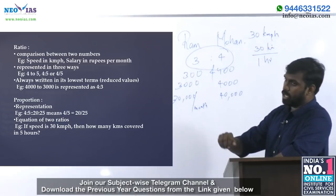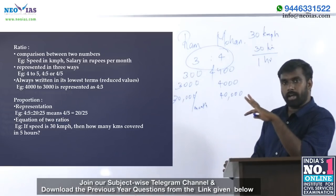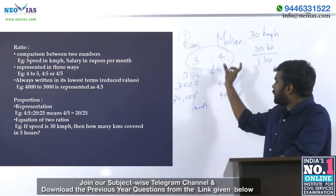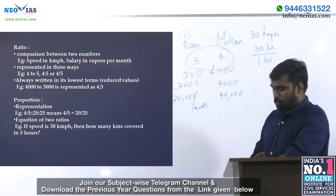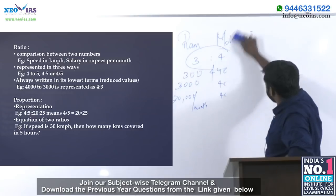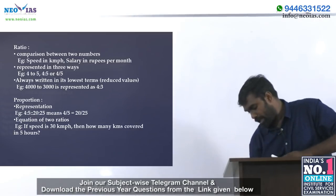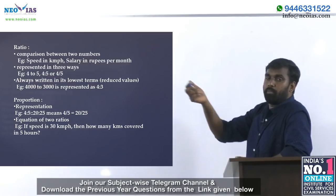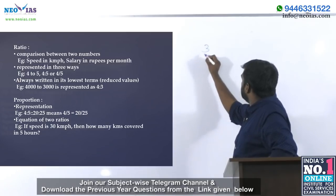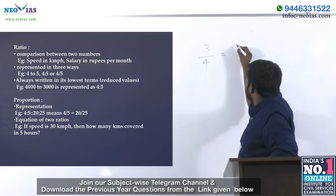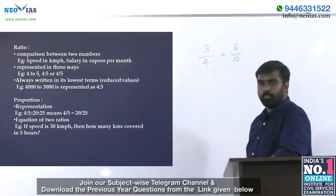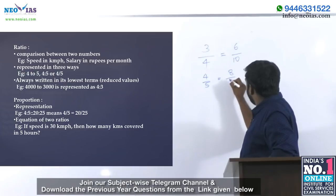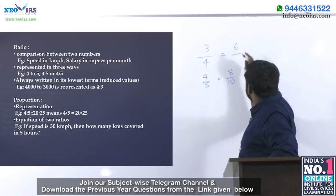In the case of ratio, there is a set of comparison, and the concept is that it should be expressed in its most reduced, simplest form. In the case of proportion, it is somewhat different. While ratio is written as 3 is to 4 or 4 is to 5, proportion means 3 is to 4 is proportional to 6 is to 8, or 4 is to 5 is proportional to 8 is to 10.